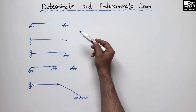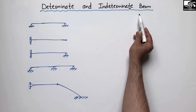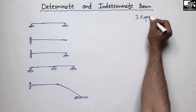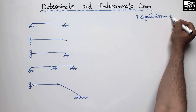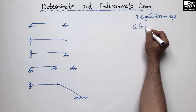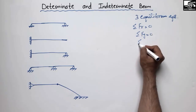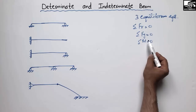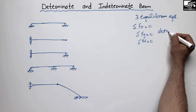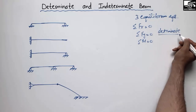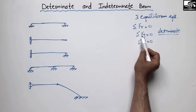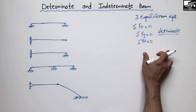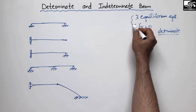The main difference between the determinate and indeterminate beam is their equilibrium equations. If we can solve our beam with the help of three equilibrium equations — summation of Fx equal to zero, summation of Fy equal to zero, and summation of moment equal to zero — then this type of beam is known as the determinate beam. But if we cannot analyze our beam with these three equations and need more steps, we call that beam an indeterminate beam.